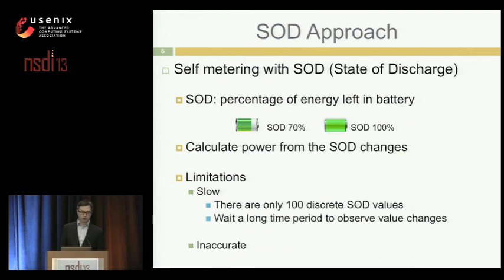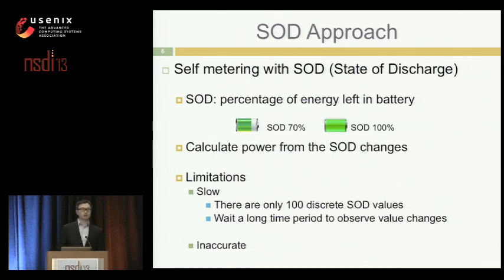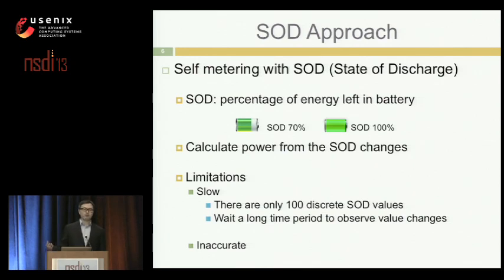However, the SOD method has limitations. First, it's very slow — there are only 100 discrete SOD values, so observing just one value change takes a long time. On Nexus S, the SOD method may take 15 minutes for one measurement. Second, it's not accurate. So do we have an alternative way to do power modeling to get voltage and current information in a fast and accurate way? That's what we came up with.